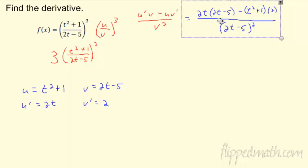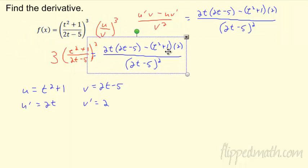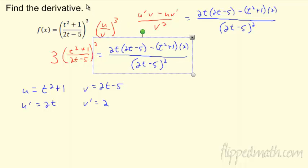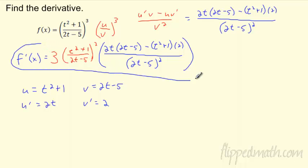I'm going to copy and paste that derivative of the inside into our chain rule expression. So the full derivative is: 3·[(t²+1)/(2t-5)]² times [2t(2t-5) - 2(t²+1)] / (2t-5)². I'm not going to clean it up — this would be the derivative. Just follow your rules and you're good to go.